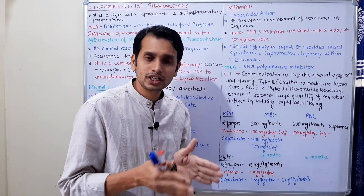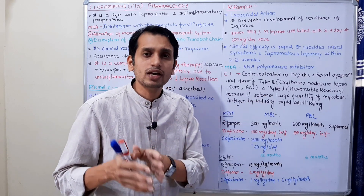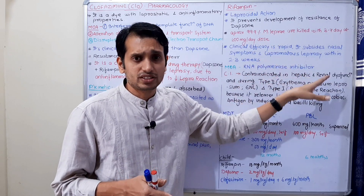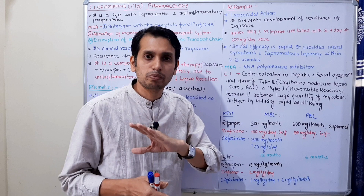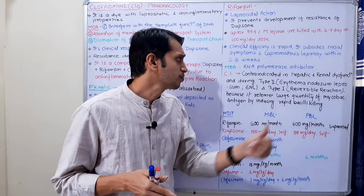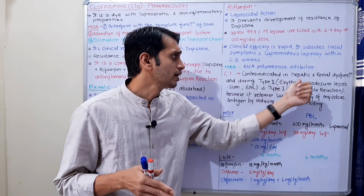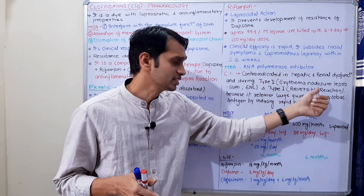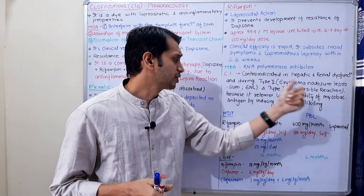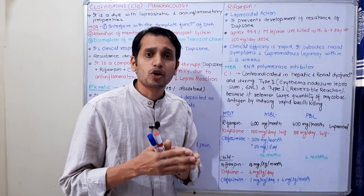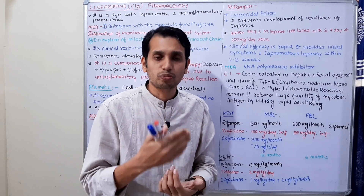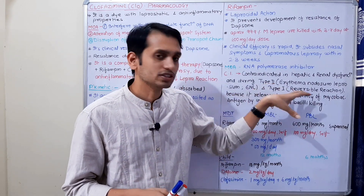Rifampicin's mechanism of action is as a DNA-dependent RNA polymerase inhibitor. It is contraindicated in patients with hepatic and renal impairment. It is also not given during Type 1 (reversal reaction) and Type 2 (erythema nodosum leprosum) reactions of leprosy, because it releases a large quantity of mycobacterial antigens by inducing rapid killing, which can worsen these reactions. Previous videos cover these reaction types in detail.